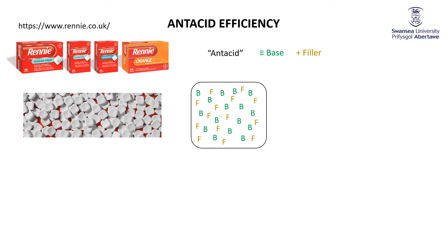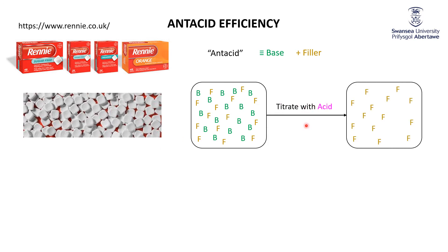What we want to know is: between two antacids, which has more base compared to filler? It's a neutralization reaction — we've got base in the antacid, so can't we just titrate it with acid? Every bit of acid we add will neutralize a bit of base. If we add enough acid, all that's left associated with the tablet is filler. At the endpoint of this titration — when we've added exactly the right amount of acid to neutralize all the base — the moles of acid added equals the equivalent moles of base.